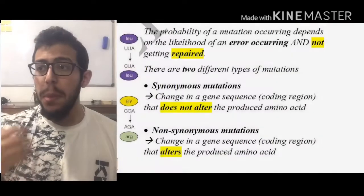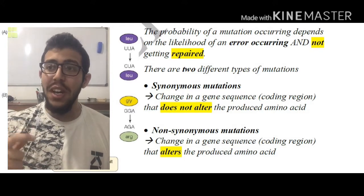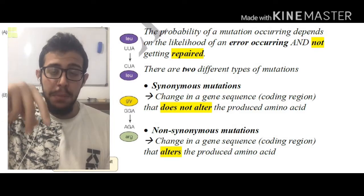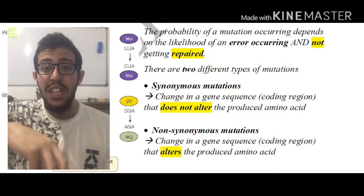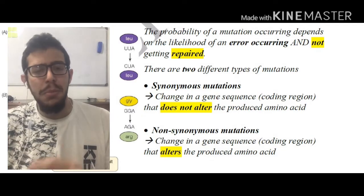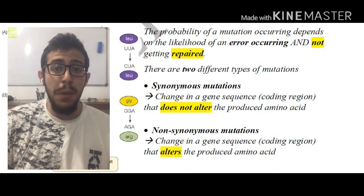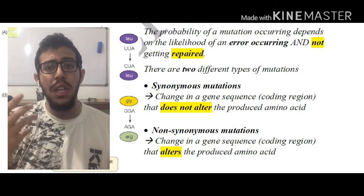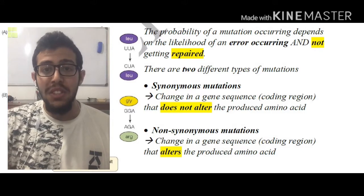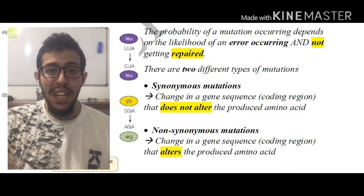The probability of a mutation occurring depends on two major things. First of all, the error occurring in the first place — for example, the insertion of an incorrect nucleotide — and the fact that this does not get repaired. We have DNA polymerase that has a 3' to 5' exonuclease activity, which has a main role in correcting these incorrect additions of nucleotides. So in case an error happens and it is not repaired, this is when the problem arises.